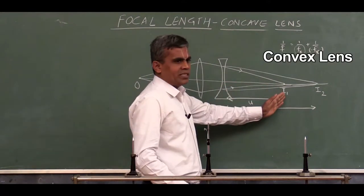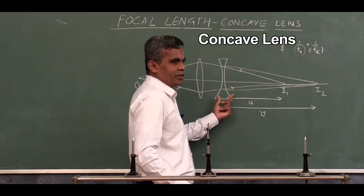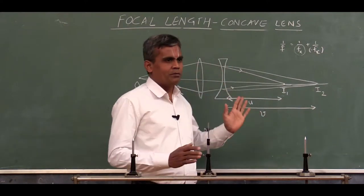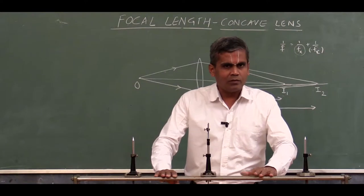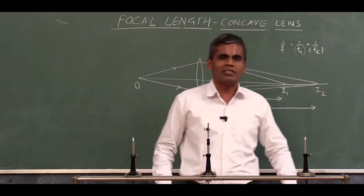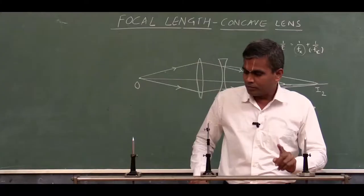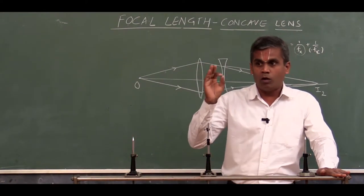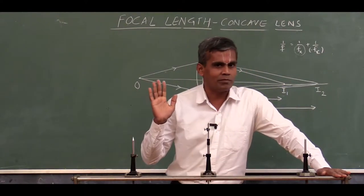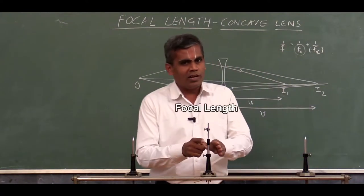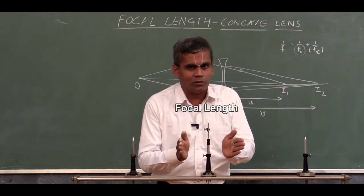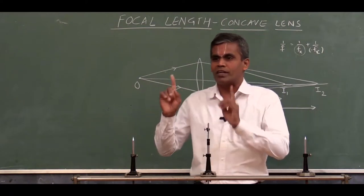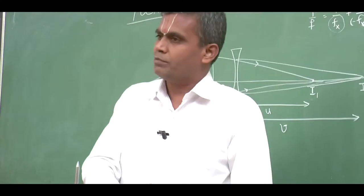Convex lens का focal length कम लेने से यह combination बढ़िया बन जाएगा। पहले Convex lens का image बनाया, Concave lens को introduce किया, final image थोड़ा दूर में मिल रहा है। इस arrangement को Optical Bench में करके reading लेने के बाद focal length मिल सकता है। पहले याद रखना: Optical Bench की horizontal positioning, vertical positioning — यह बहुत अच्छी तरह adjust करनी चाहिए। उसके बाद Convex lens का focal length निकालना होगा, क्योंकि हमारा object between F and 2F रखना चाहिए, so that image 2F के बाद में मिले।